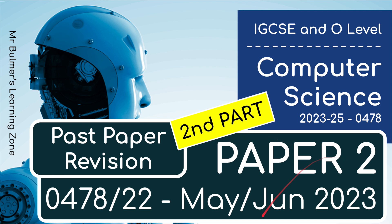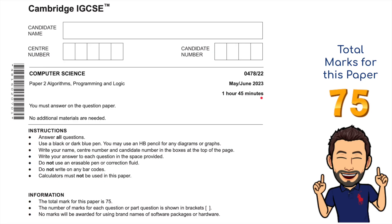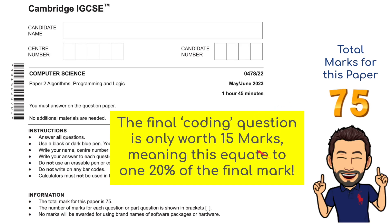Welcome back to the second part for Paper 2, from May/June 2023, Zone 2 2022 paper. The paper is an hour and 45 minutes. Part 1 took about an hour, so now we're moving on to Part 2. Remember, Part 2 is only worth 15 marks — that's only 20% of the final mark. This video will show you how to pick up some easy marks and then move on to some more advanced techniques.